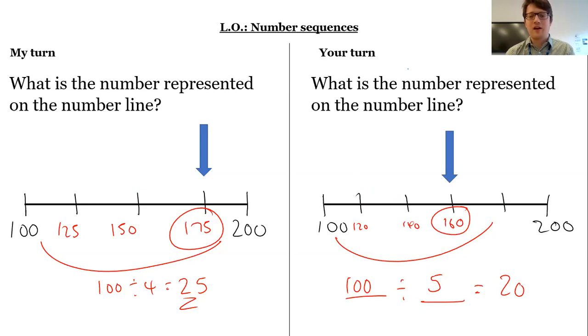So have a go now at the independent task. Remember the steps to success here. Work out what's the gap between the two numbers that I know on the number line. Put that here. Then divide by the number of parts in between those two numbers. And then you can work out what each step is worth on the number line and what the arrow is pointing to.